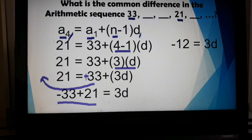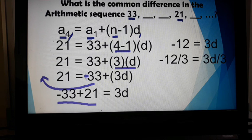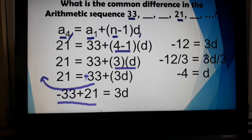From here, we can get the value of our common difference. Remember, we have to remove 3 next to letter d. You remove this by dividing both sides by 3. So 3 divided by 3 is equal to just d. And then negative 12 divided by 3 is equal to negative 4. So our common difference here is negative 4.